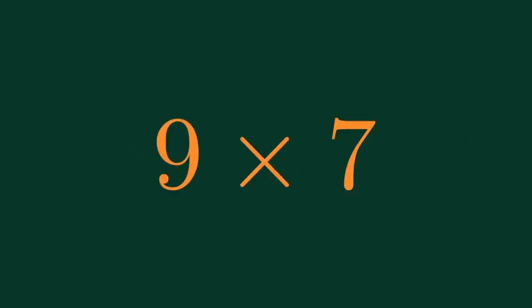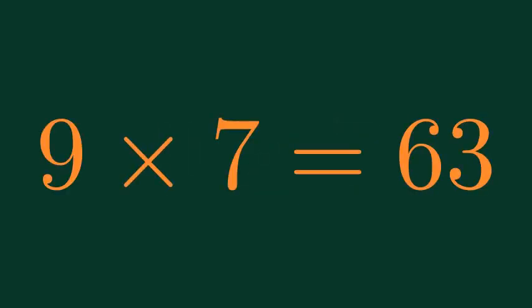What is 9 times 7? 9 times 5 is equal to 54. 9 times 7 is equal to 63.